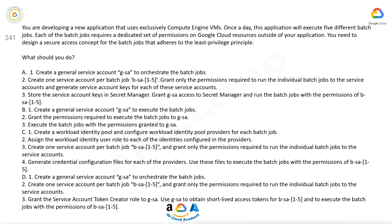Option D: 1. Create a general service account GSA to orchestrate the batch jobs. 2. Create one service account per batch job BSA-1 through BSA-5 and grant only the permissions required to run the individual batch jobs to the service accounts. 3. Grant the service account token creator role to GSA. 4. Use GSA to obtain short-lived access tokens for BSA-1 through BSA-5 and to execute the batch jobs with the permissions of BSA-1 through BSA-5.